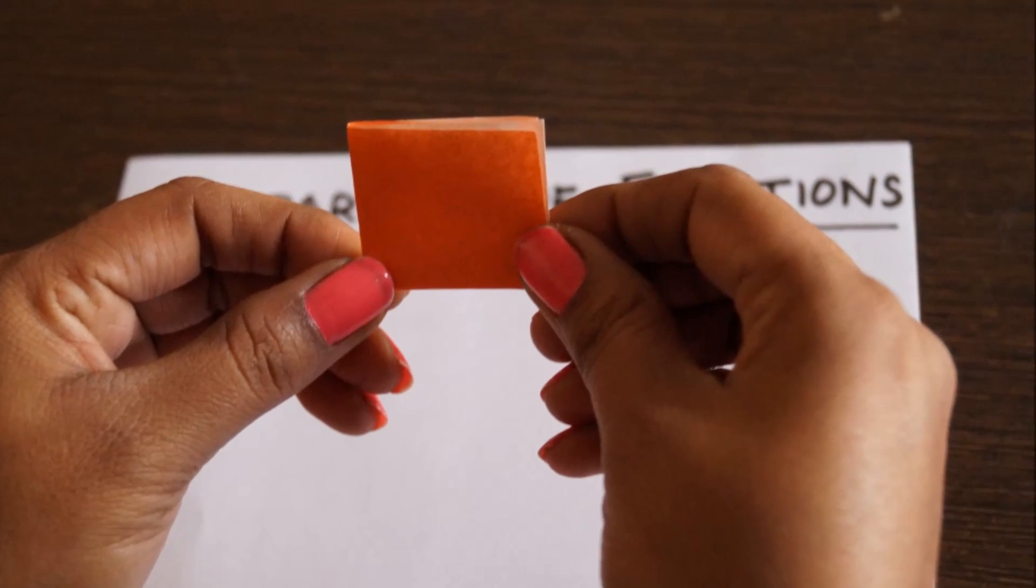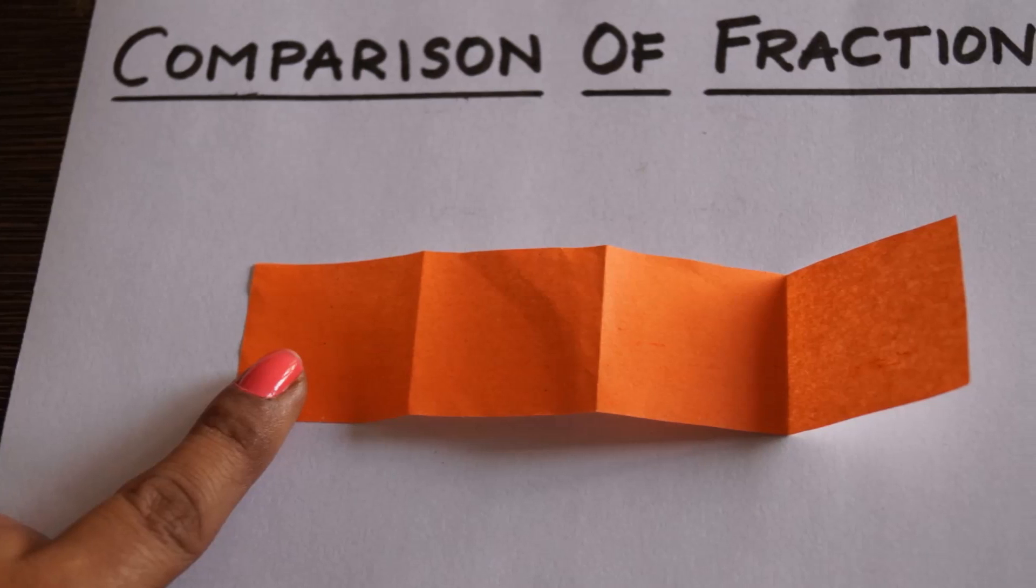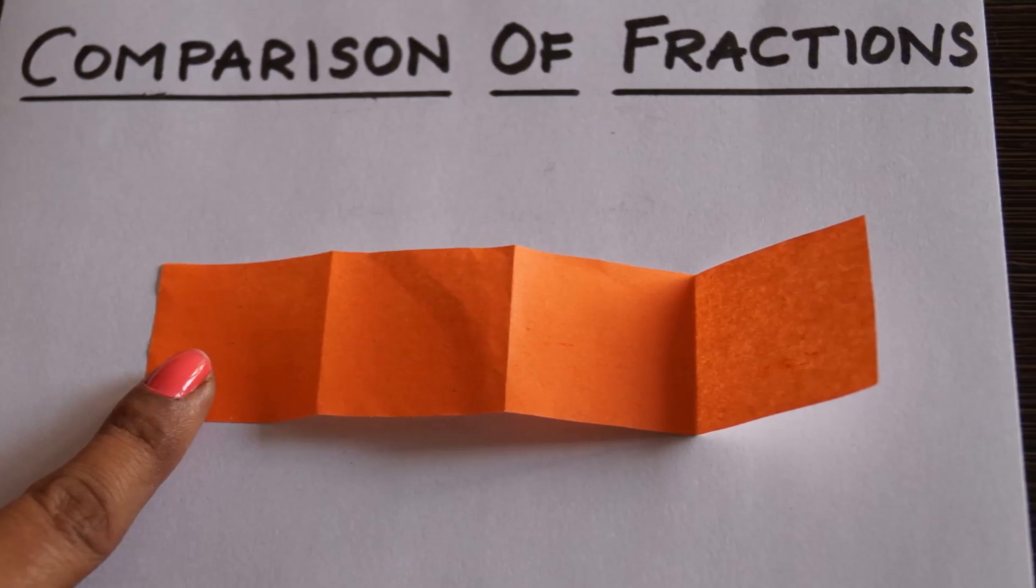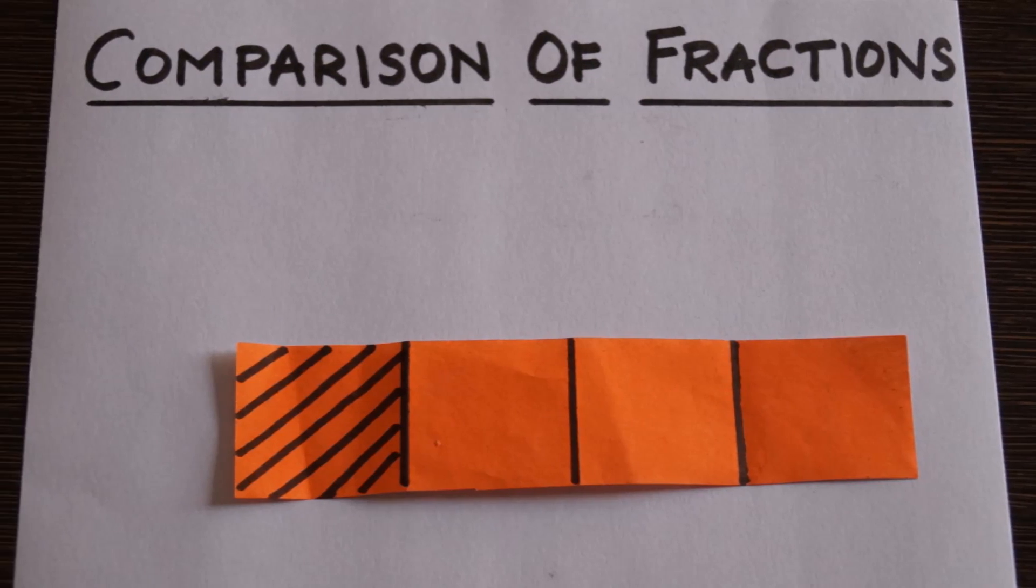Now, take the second strip and divide it into four equal parts and shade one part.